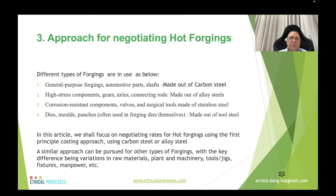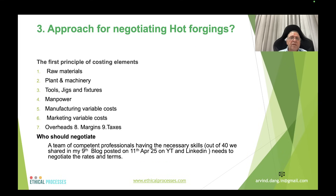The approach for negotiating hot forging rates considers that components can be made from carbon steel, alloy steel, or stainless steel depending on application. First-principle costing elements include raw materials, plant and machinery, tools, jigs and fixtures, manpower, machine variable costs, marketing costs, overheads, margin, and taxes. The negotiating team should comprise competent professionals having the necessary skills, as identified across the 40 skills discussed in the ninth blog posted on 11th April.